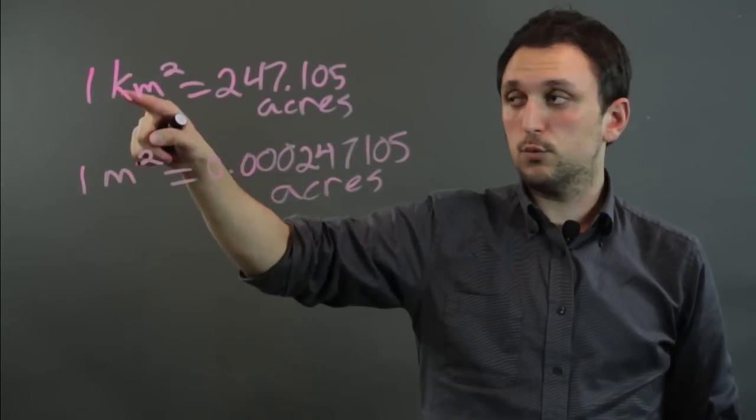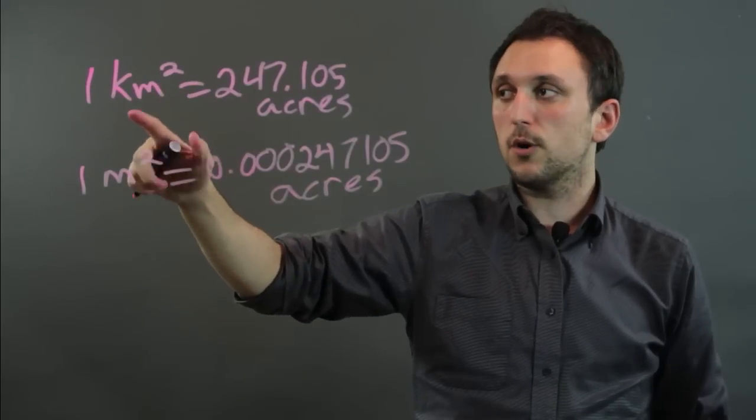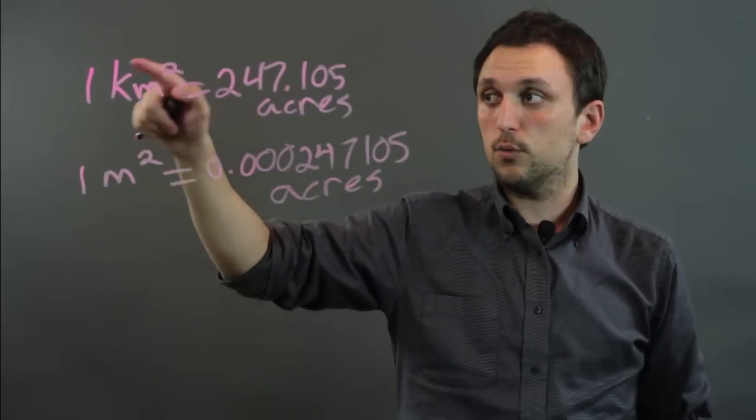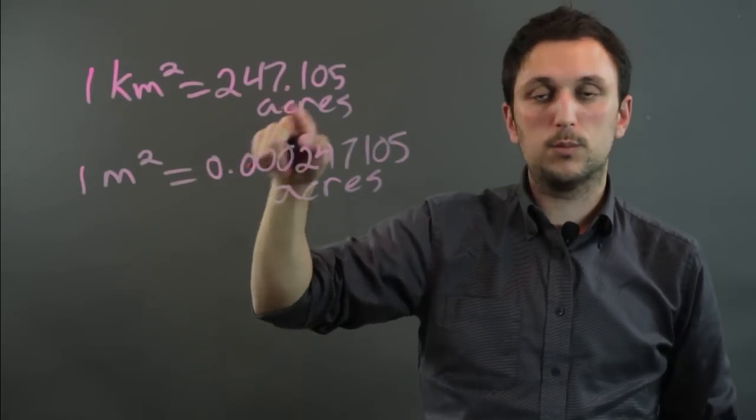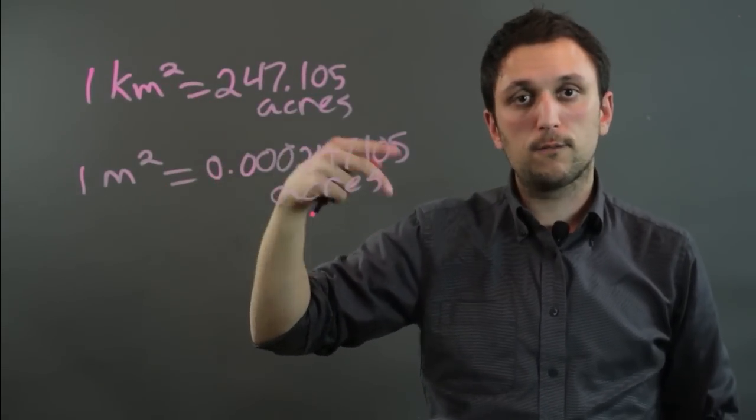One meter is one one-thousandth of a kilometer, but one meter squared is one one-millionth of a square kilometer. So we actually don't just move it three decimal places over, we move it six for the millions.